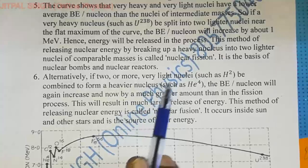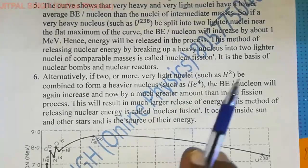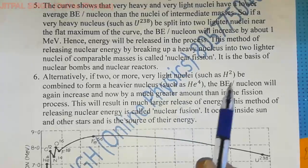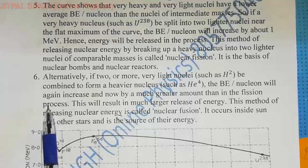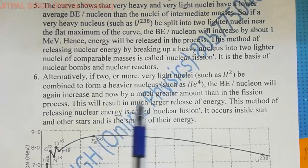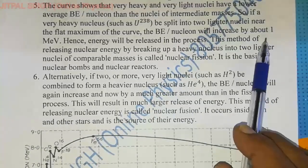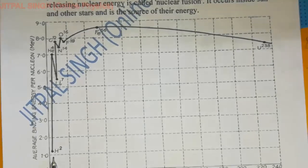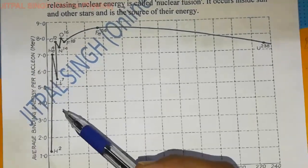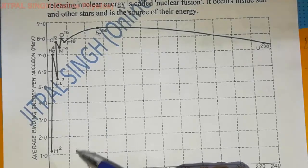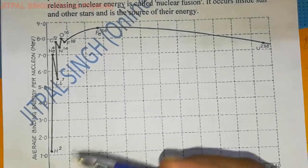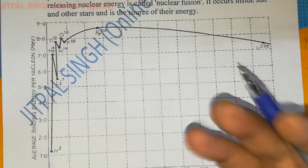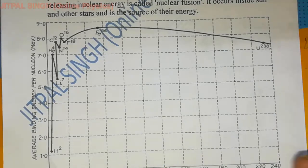Alternatively, if two or more very light nuclei such as 1H2 combine to form a heavier nucleus such as 2He4, the binding energy per nucleon will again increase — and by a much greater amount than in fission. In fission, energy increases by just 1 MeV per nucleon, but for fusion: 1H2 has a binding energy per nucleon of 1.1 MeV, while helium has 7 MeV — an increase of approximately 5.8 to 6 MeV. This very large increase means nuclear fusion is also a very high energy source.